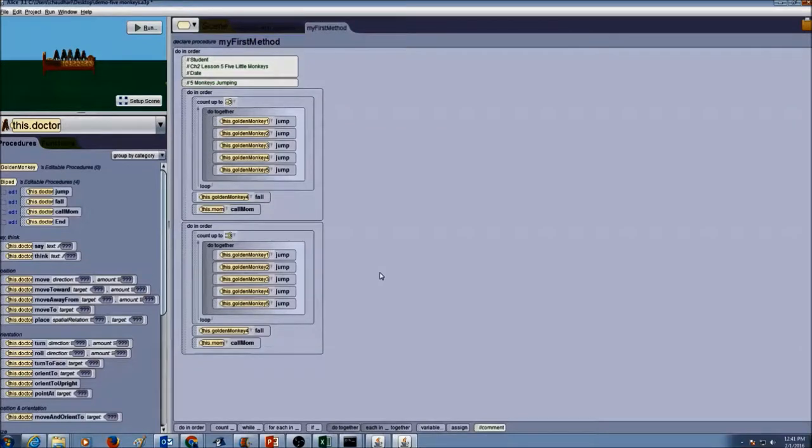Now the next and most important thing we need to do is look into the fall. Which monkey falls in our first scene? It says golden monkey 4 fall. So that means monkey number 4 is out of picture. So we want to take a look at monkey number 4 and we want to just delete that jump. Simple as that.